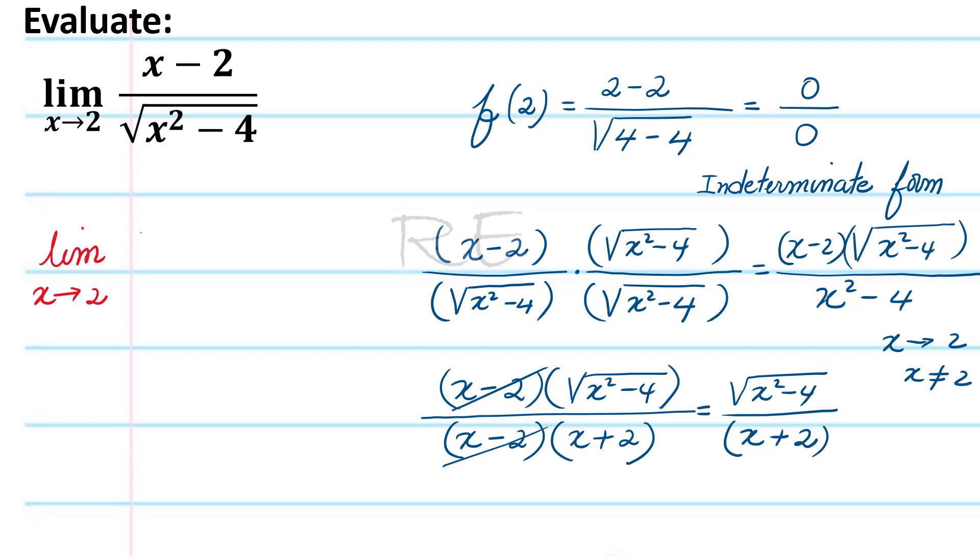We're going to take the limit of the rationalized version of the function. So the limit as x approaches 2 of square root of x squared minus 4 divided by x plus 2 can be calculated by direct substitution.